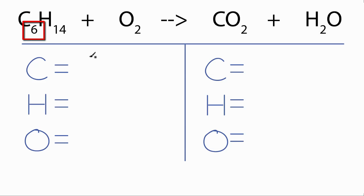We've got six carbons, and on the product side, we only have one carbon. We have 14 hydrogens here. We have two here. Oxygens, we have two. And on this side, we have two plus this one right here. That gives us a total of three oxygens.